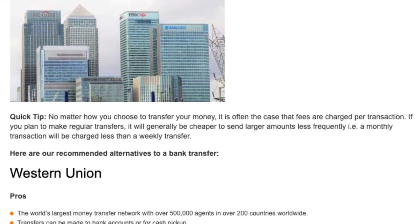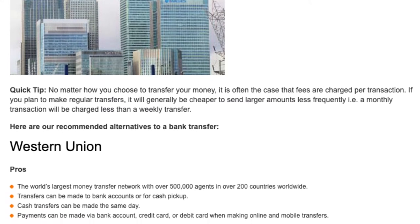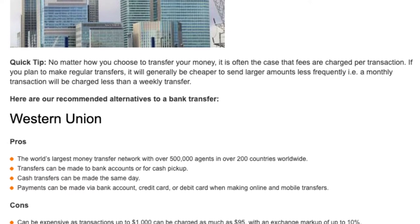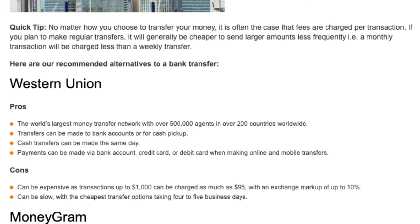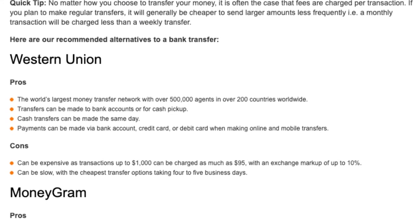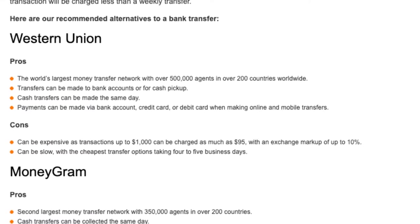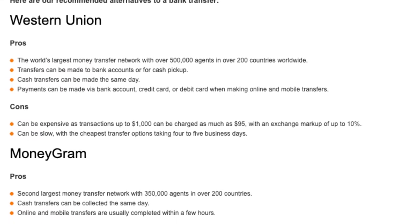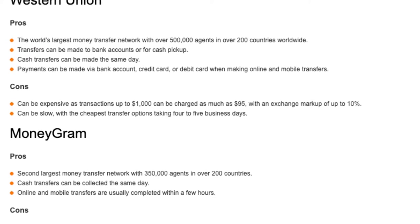If you plan to make regular transfers, it will generally be cheaper to send larger amounts less frequently. A monthly transaction will be charged less than a weekly transfer. Here are our recommended alternatives to a bank transfer. Western Union — Pros: the world's largest money transfer network with over 500,000 agents in over 200 countries worldwide. Transfers can be made to bank accounts or for cash pickup. Cash transfers can be made the same day. Payments can be made via bank account, credit card, or debit card when making online and mobile transfers.